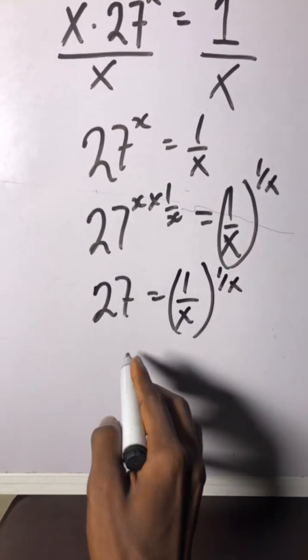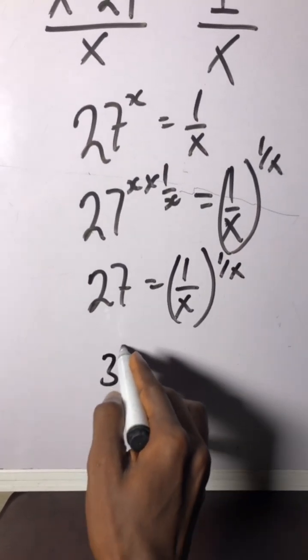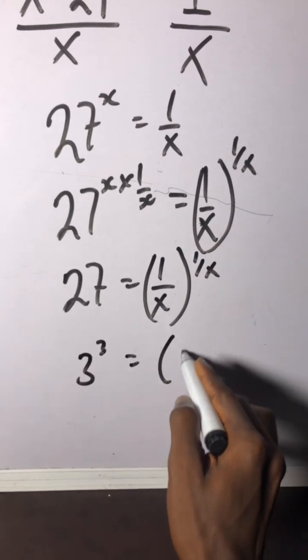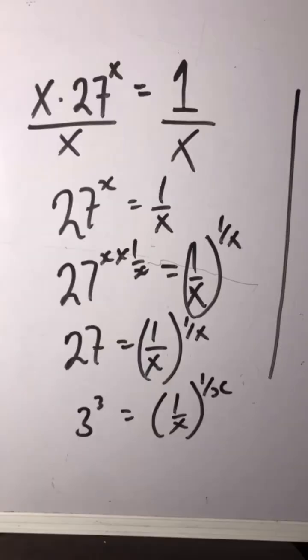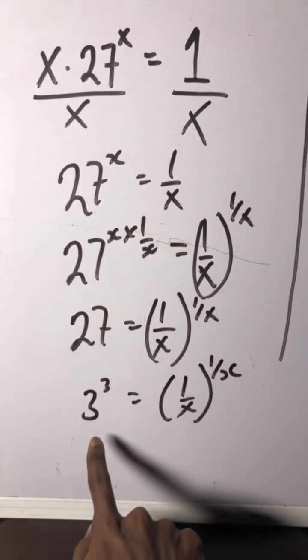Let's take this index form. This is basically 3 to the power of 3 equals 1 over x to the power of 1 over x. Since the base is the same as the power,